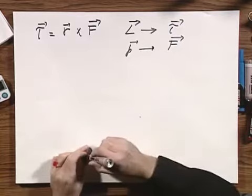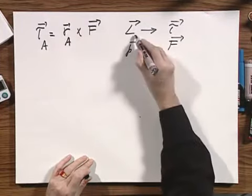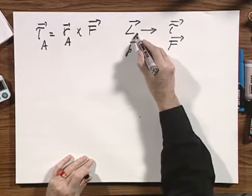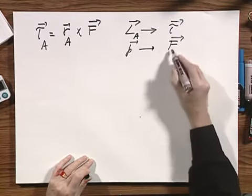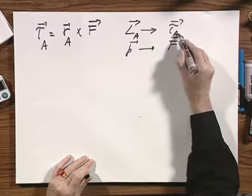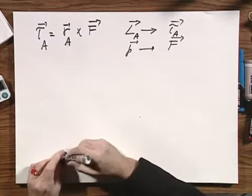Again, tau must be taken relative to a particular point. I will obnoxiously indicate that here. It must be taken relative to a particular point. And to talk about the torque about an axis is undesirable language.